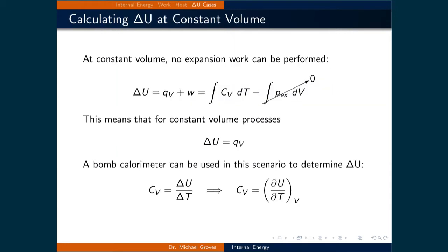Let's now see how path and state functions interact with each other. The first law of thermodynamics combines the change in internal energy, a state function, with the path functions heat and work. If the process occurs at a constant volume, then there can be no expansion work. That means the change in internal energy is solely based on the heat transferred. As a result, we can directly calculate the heat capacity at constant volume by measuring the change in internal energy with respect to a change in temperature. A bomb calorimeter, with its fixed volume reaction chamber, is a device that can be used to make this type of measurement.